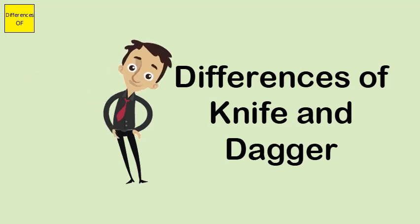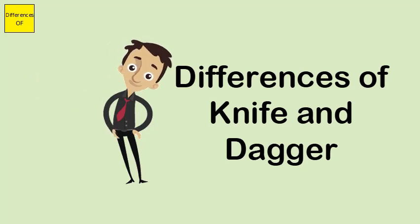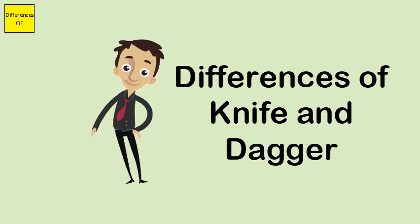Knives have one side sharpened. However, these days there are many knives that have both edges sharpened. A dagger has both edges sharpened.